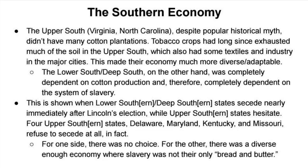States like Delaware, Maryland, Kentucky, and Missouri refused to secede at all because they were not nearly as dependent on slavery as the deep southern states. Virginia did not secede until after the firing on Fort Sumter in South Carolina. For the deep south, there was absolutely no choice — their only bread and butter was to continue taking advantage of the slave system.